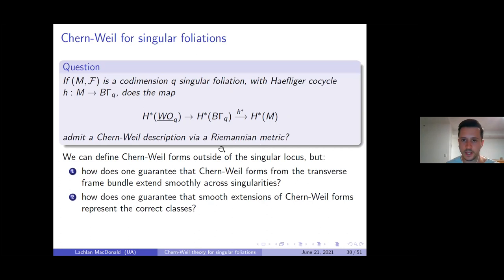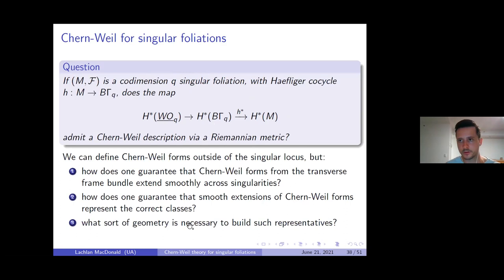Several subproblems arise. Outside the singular locus you have transverse frame bundles and can define a characteristic map for the regular sub-foliation. But how do you guarantee the differential forms from the Chern-Weil construction extend smoothly across singularities? Even if they do, how do you know those global forms represent the correct cohomology classes? And what sort of geometry is necessary to build representatives that extend smoothly — the answer is you need singular metrics, and the corresponding connections blow up towards singularities.